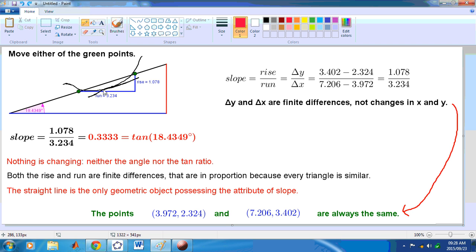And this here is a secant line. And of course, as you can see over here, nothing is changing. All we're doing is just moving these green points along. And so, we really have the only geometric object that has a slope is a straight line. If it's a nonlinear curve, then it has a tangent at that point. And the slope of the tangent line at that point is called a derivative. Yes? It's called a derivative.